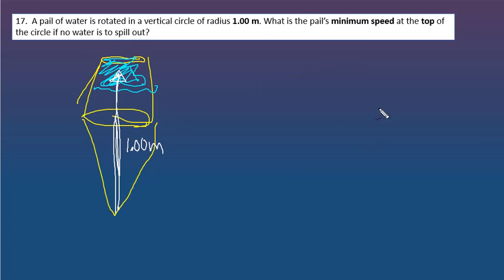And then the question is, what is the pail's minimum speed at the top? Because each position is slightly different, right? The weight vector, the tension pretty much stays the same in terms of direction, but the weight vector changes its position relative to the circle.